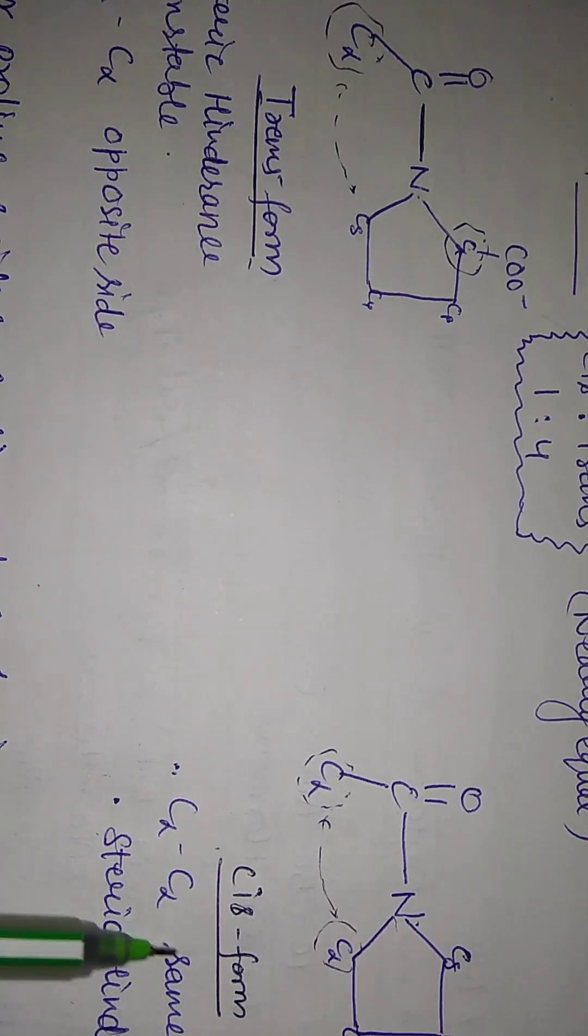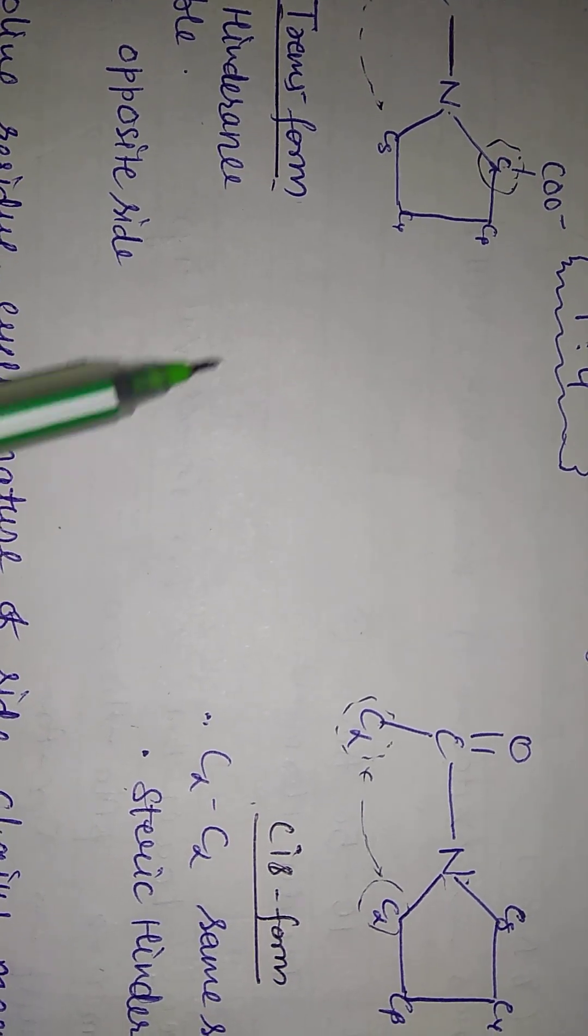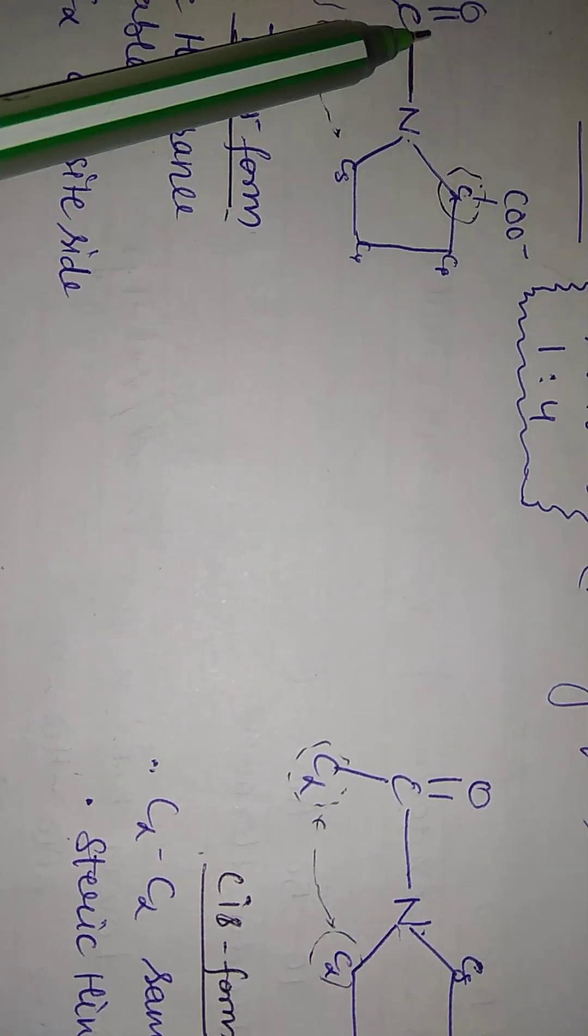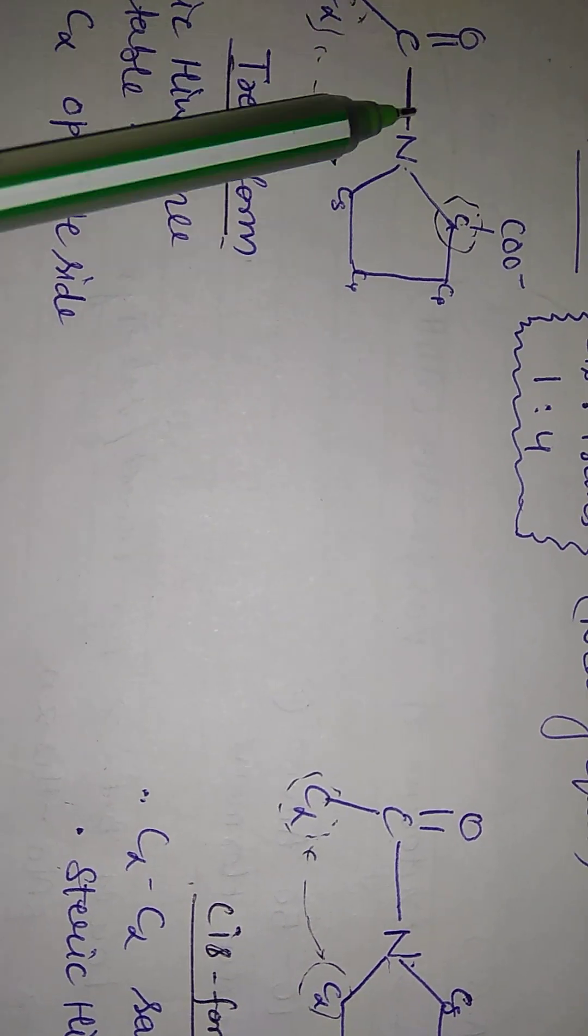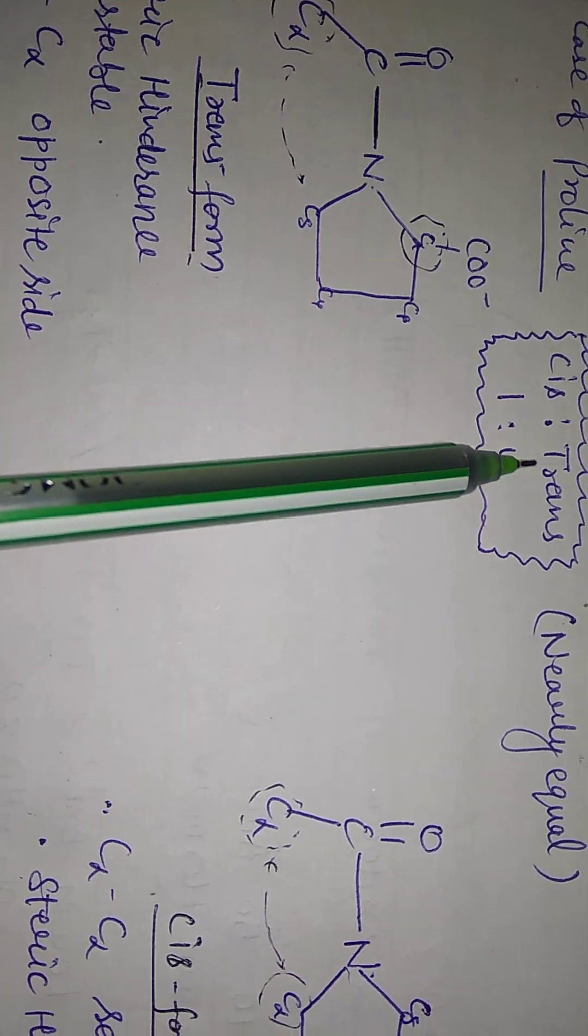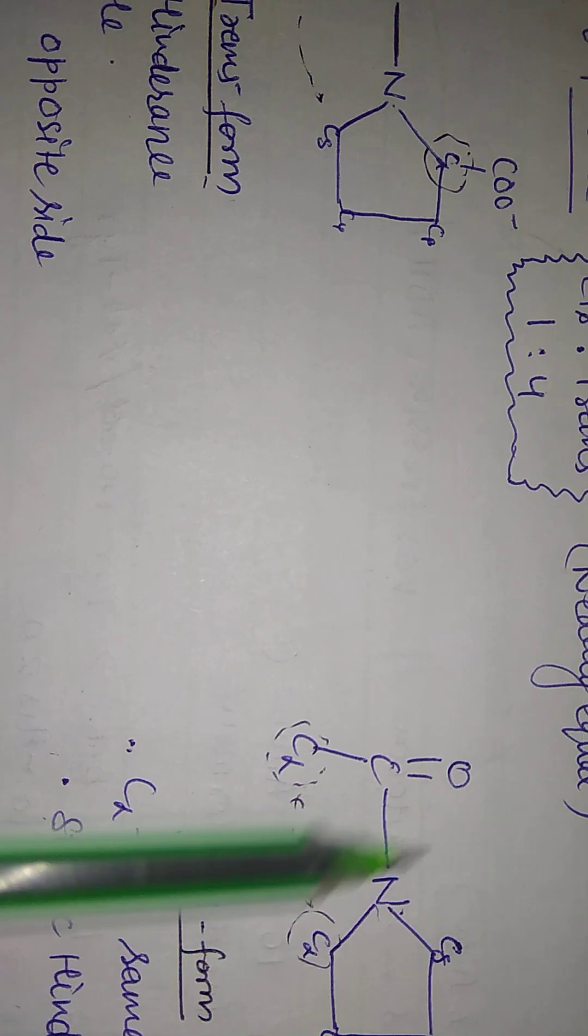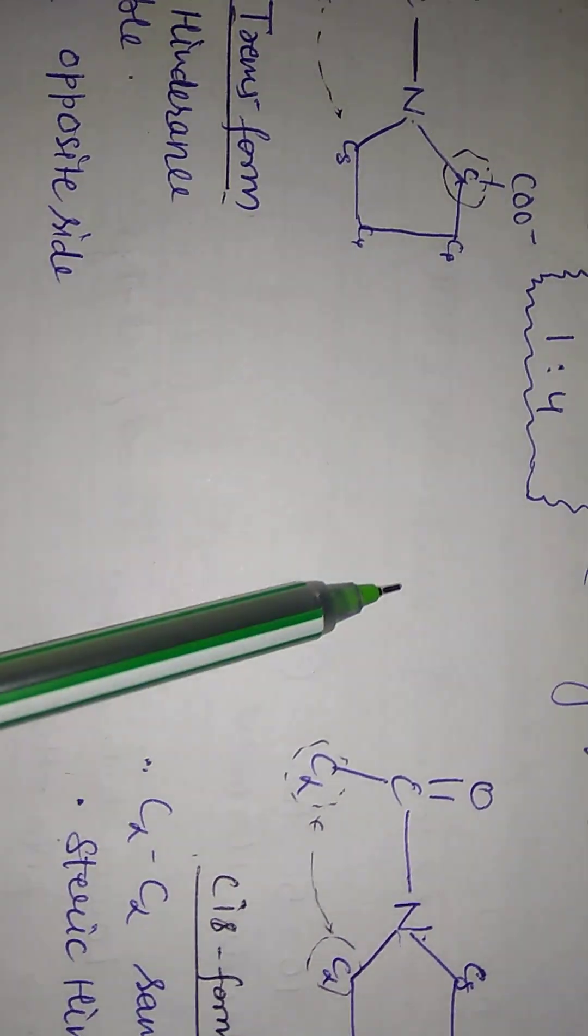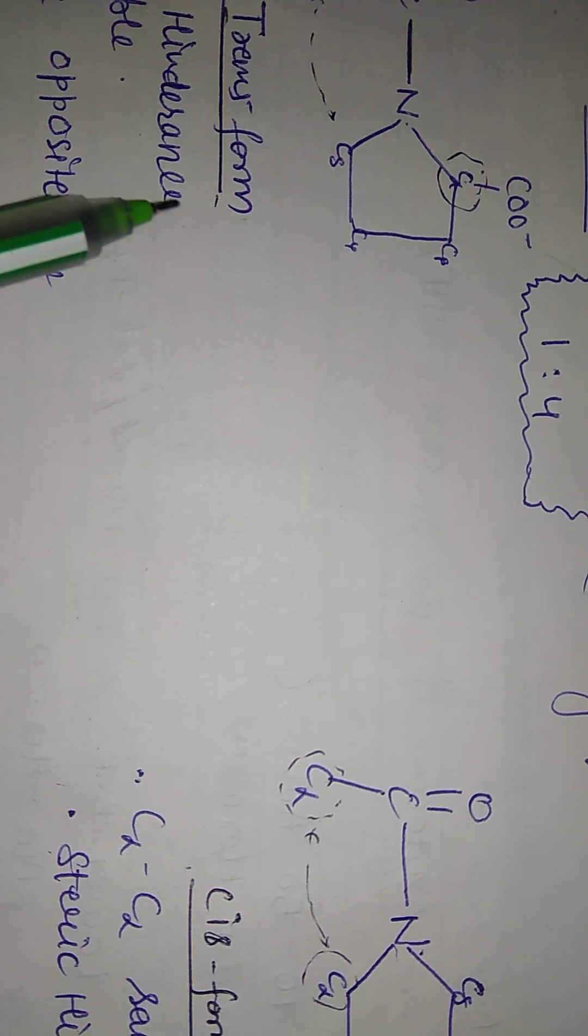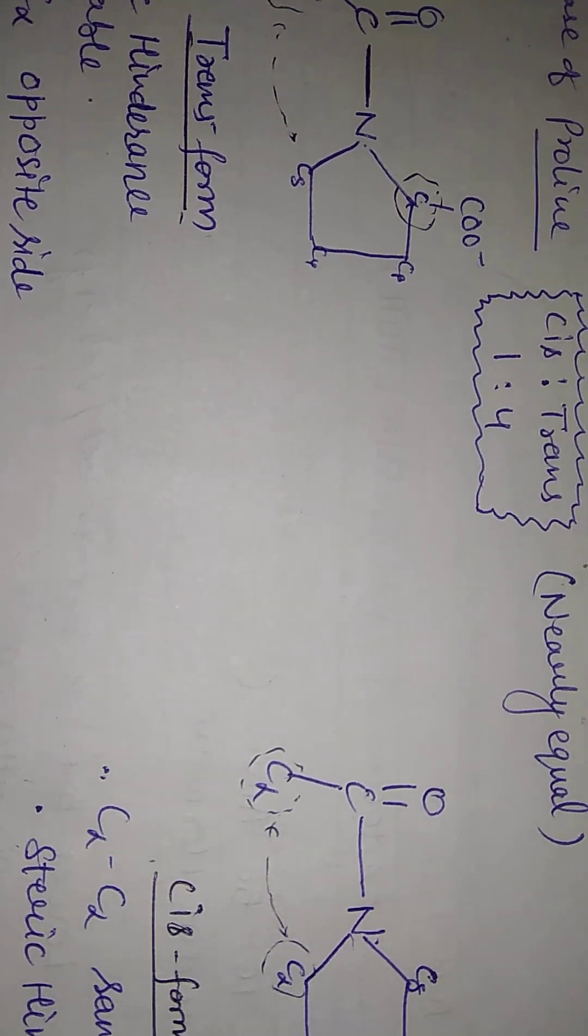When we observe the peptide chain, we will say that the cis conformation will be more than trans. So if we see the bond, if the proline is involved in it, then there will be a cis trans. If the proline is involved in it, then the peptide bond is in other amino acids. Proline is involved in it. Then the cis trans. The trans. The trans is 2,000. Thank you.